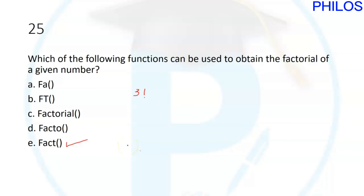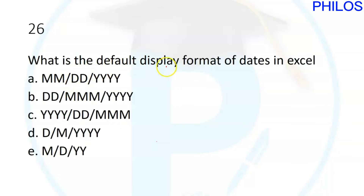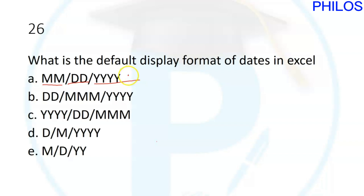Question twenty-six: what is the default display format of dates in Excel? The default format is month first, then day, then year. For example, 13th April 2023 would be displayed as 04/13/2023. The correct answer to question twenty-six is A.